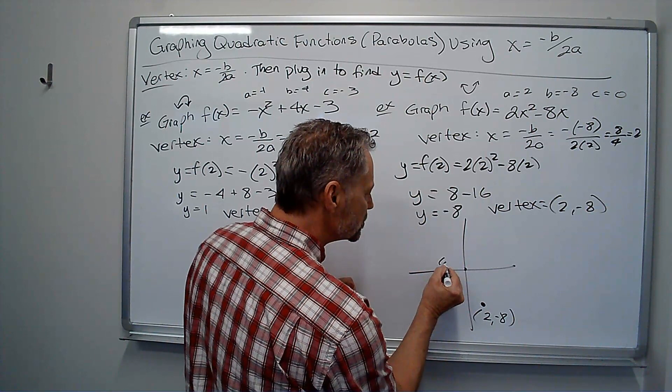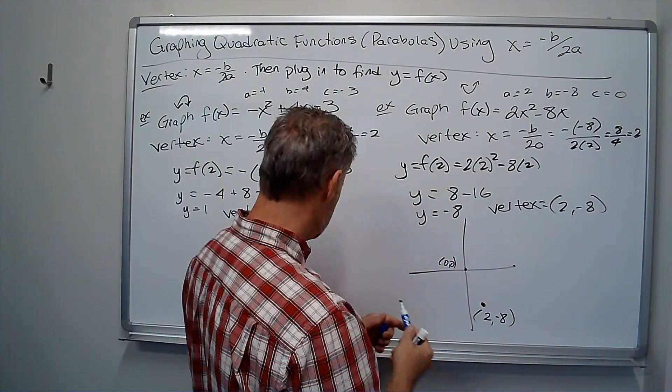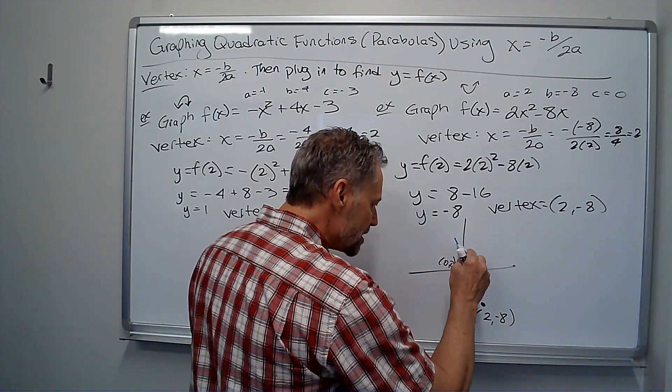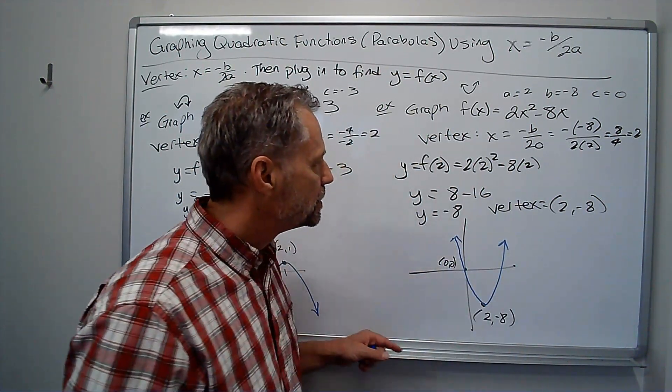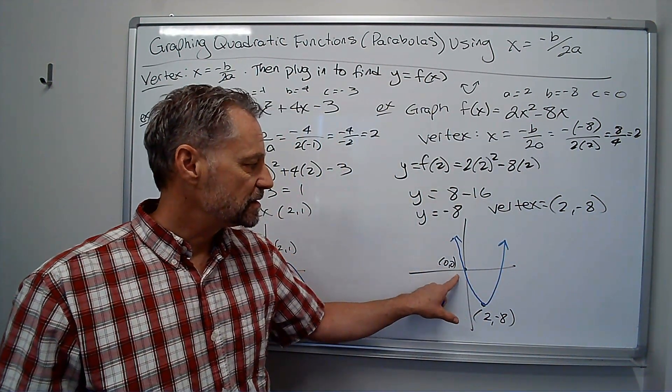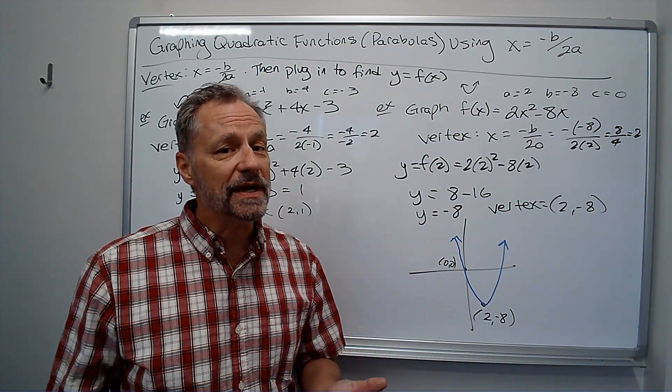And so notice this time it does open up, vertex 2 negative 8, y intercept 0, 0. And I've graphed it real quickly.